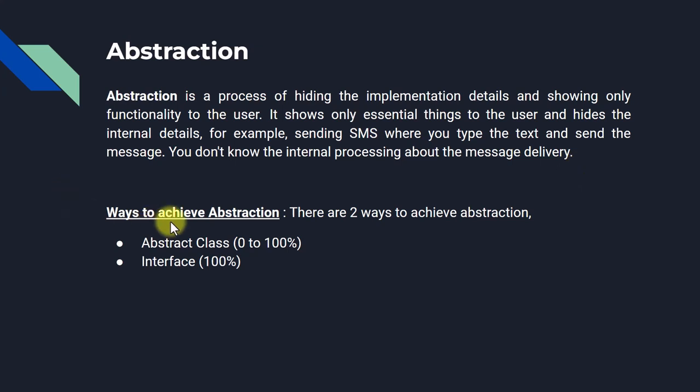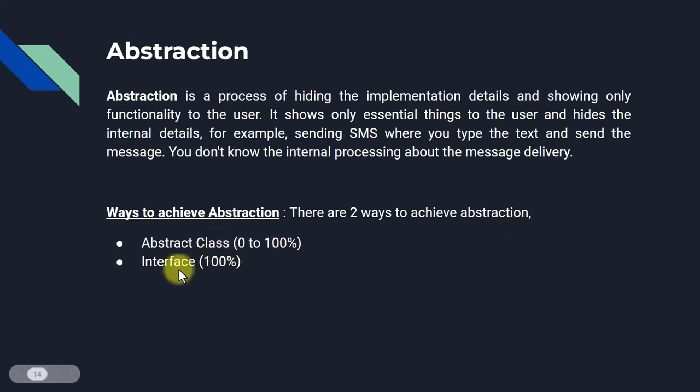So how do we achieve abstraction? There are two ways to achieve abstraction: the first is the abstract class, and the second is the interface.